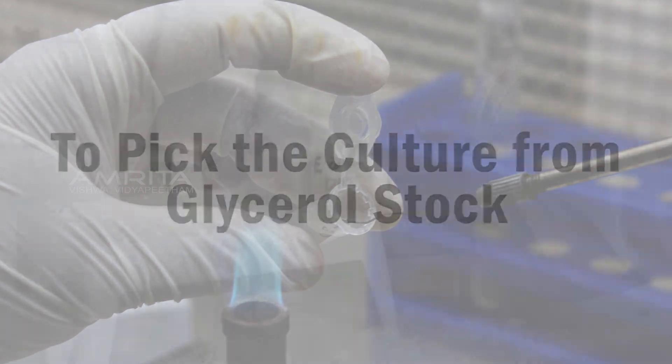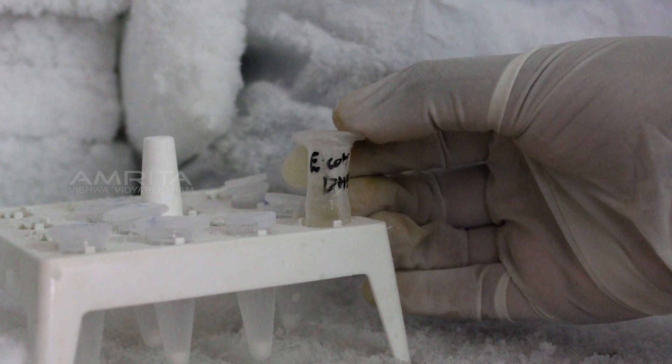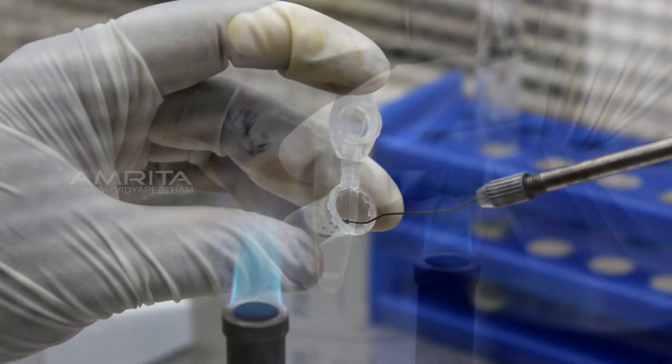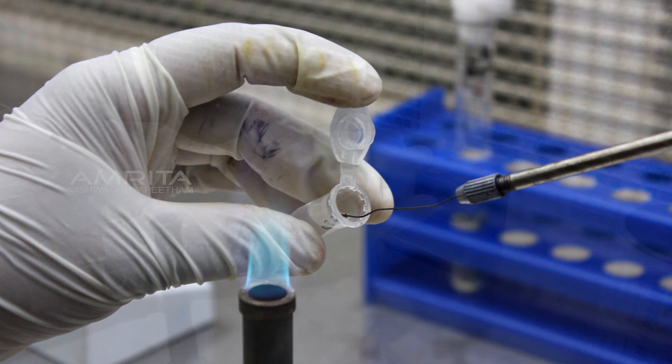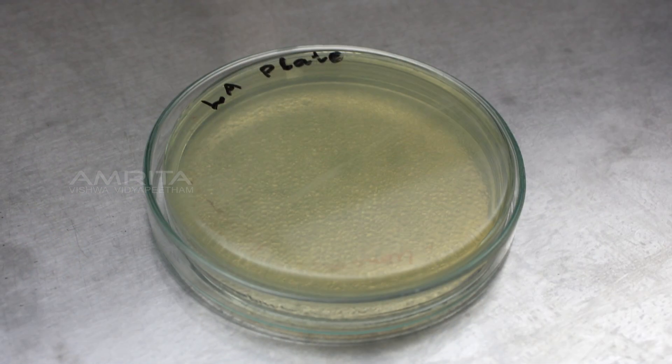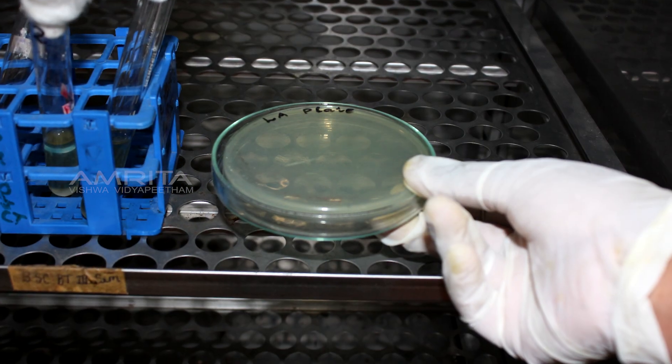To pick the culture from the glycerol stock, remove the glycerol stock from the minus 80 degrees Celsius freezer. Scrape off a portion of the stored culture from the top of the frozen glycerol stock and streak it onto an LB agar plate. Incubate the plate overnight at 37 degrees Celsius.